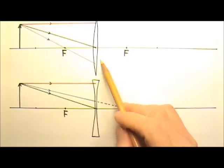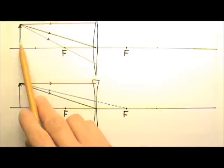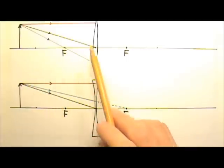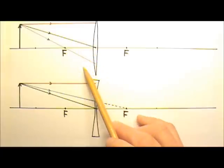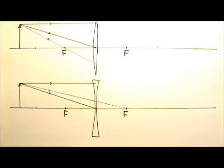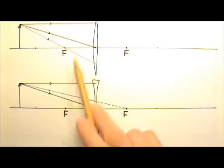Here we have a converging lens and a diverging lens. Each has an object in front of it. In each diagram there are three rays coming from the tip of the object striking the lens. Please draw the rays coming out of the lenses to show the continuation of these rays.